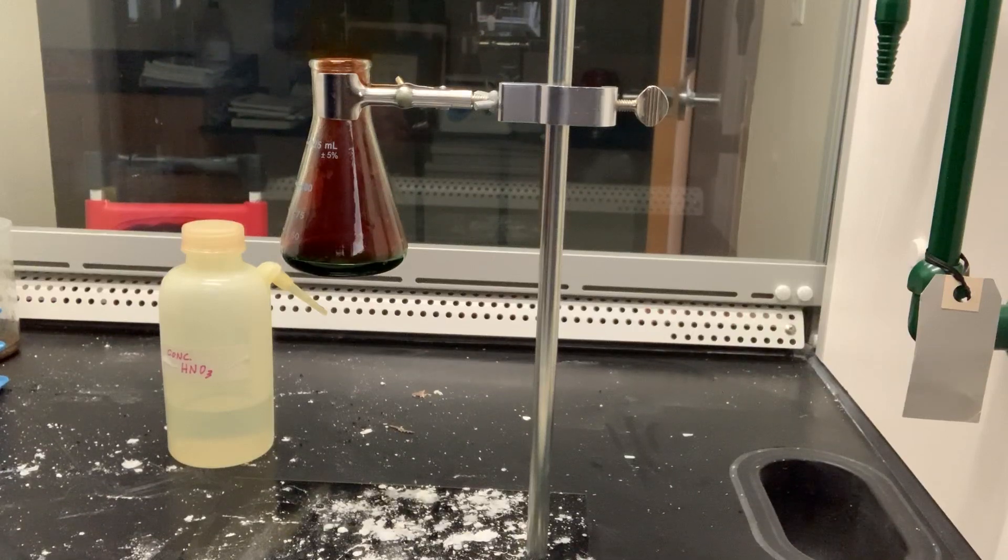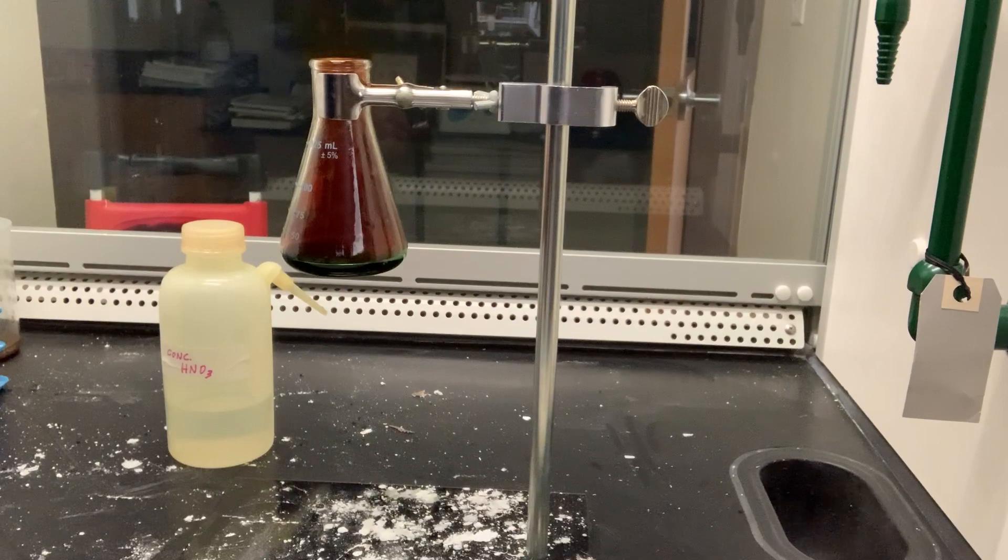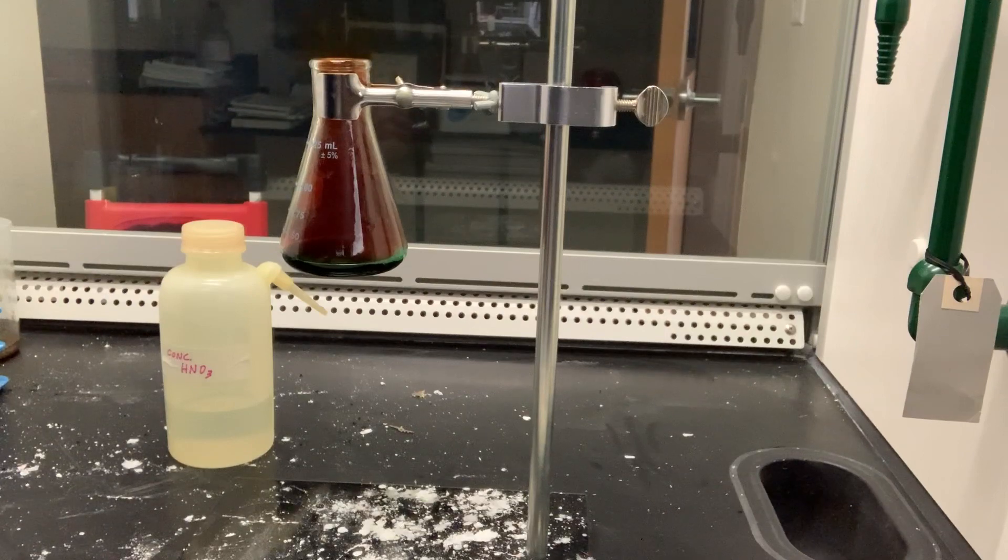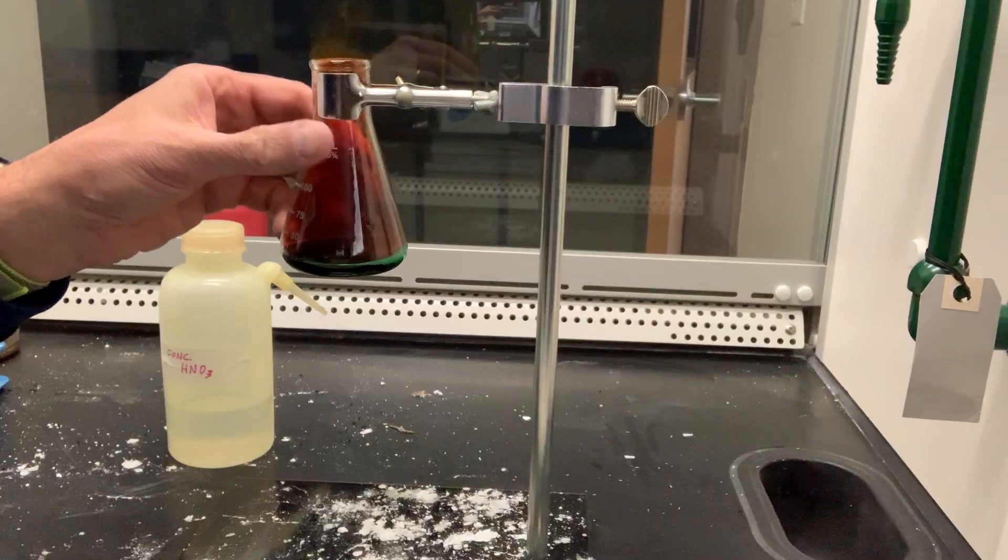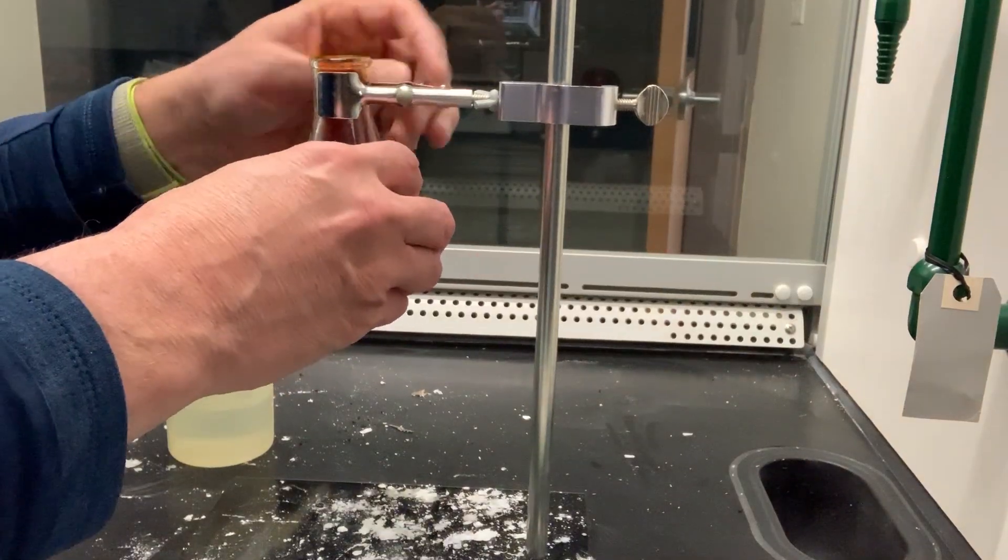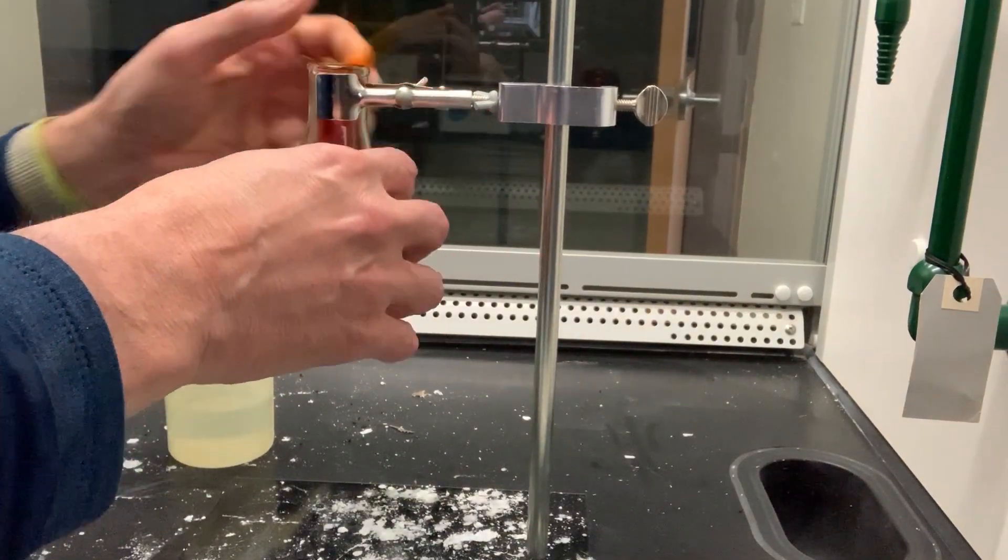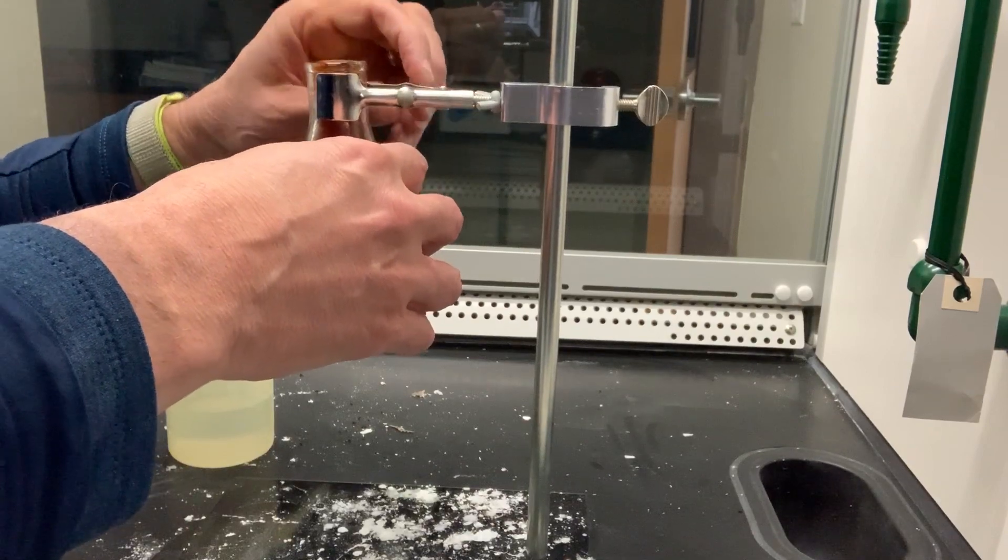Close quote. The reddish-orange gas that was produced is nitrogen dioxide, a very toxic gas. That's why we're using the fume hood today.